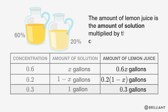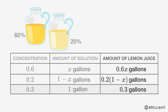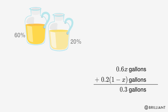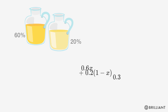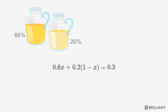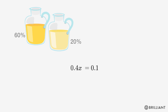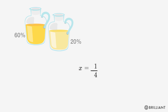The amount of lemon juice is the amount of solution multiplied by its concentration. We can use the total amount of lemon juice to solve for X. First distribute the 0.2, then subtract 0.2X from 0.6X to get 0.4X. Subtract 0.2 from both sides, divide by 0.4, and you get that X equals one fourth, or 0.25.